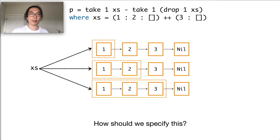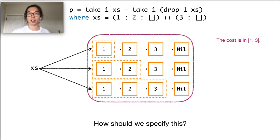The typical way of specifying a program is based on over-approximations. In this case, the over-approximation of xs is that the cost is in the range of 1 to 3. And we can apply this specification to reason about p. First, we note that p requires at least the first two cells of the list.